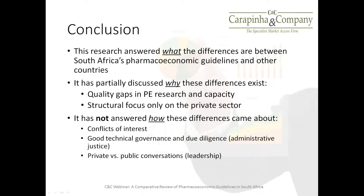Part of the other concluding remarks is that this research only answers what the differences are between South Africa's guidelines and other countries. It partially answers why these differences exist — things such as quality gaps in pharmacoeconomic research and capacity. This is not a personal thought; it is based on research that has been done in South Africa. The structural focus on the private sector may also explain why there are differences between South Africa's pharmacoeconomic guidelines and other countries.